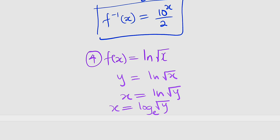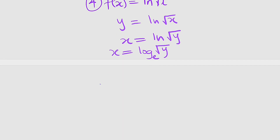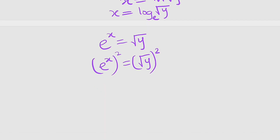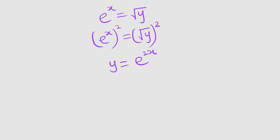From here, we can apply the definition of logarithm. E to the power of x is equal to the square root of y. We want to solve for y, so we can square both sides. E to the power of x, all squared, equals the square root of y also squared. And you can see that y is equal to e to the 2x. Finally, we replace y with f inverse of x. Our inverse function is equal to e to the 2x.